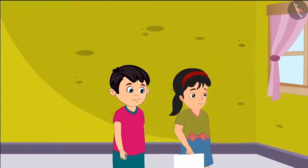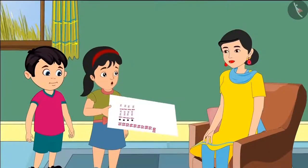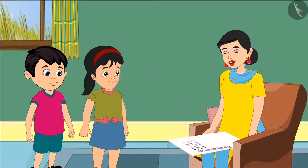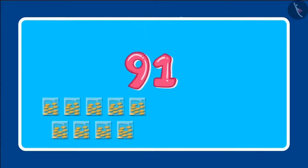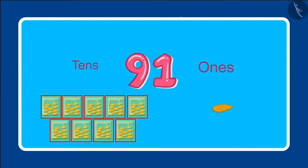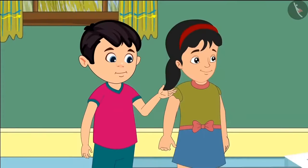Both of them are going to show the chart to their mother before writing further. They say, Mommy, look, we are preparing this chart to put in class. Their mother replies, hey children, you have written it upside down! We write 91 like this — there are nine tens and one ones in it, that means nine bundles of ten and one loose. Shotu says, oh yes, we have made this mistake in all the numbers!